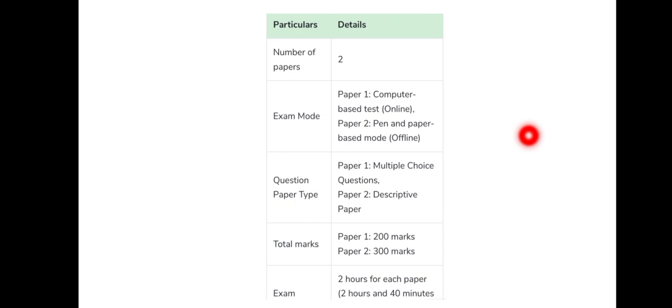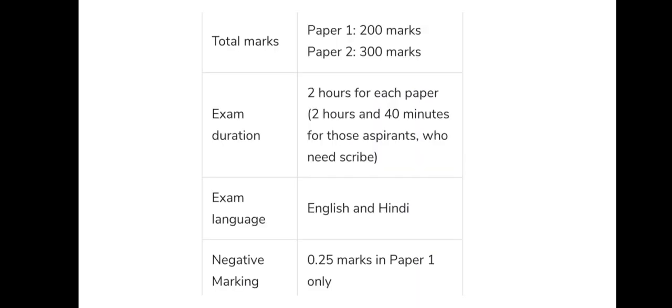For Paper 1 it is 200 marks, and Paper 2 is 300 marks. The exam duration is 2 hours for each paper, with a time limit of 2 hours 40 minutes. Language available is English and Indian languages. Negative marking is 0.25 marks for Paper 1.